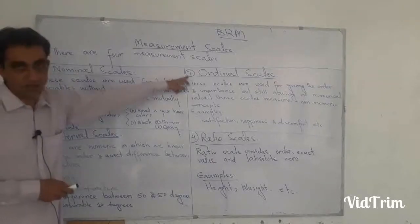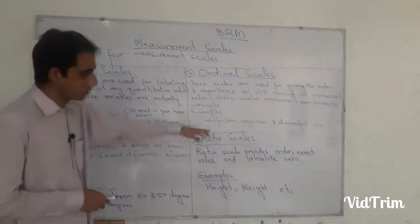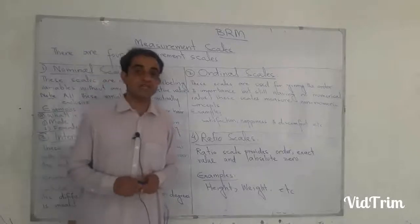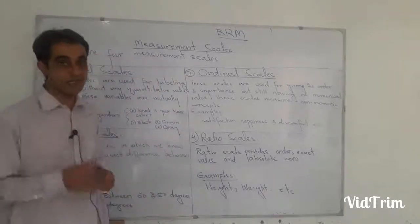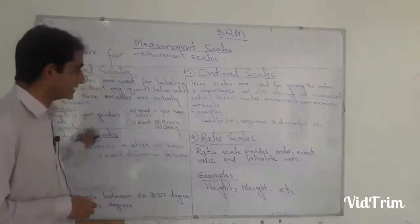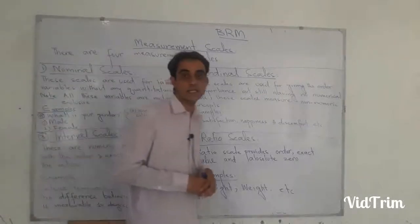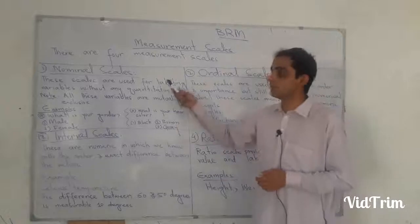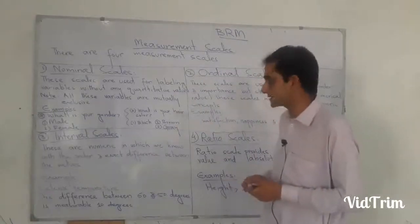Their names are: number one, nominal scale; number two, ordinal scale; number three, interval scale; number four, ratio scale. Now coming to them one by one — nominal scale, ordinal scale, interval scale, and ratio scale.